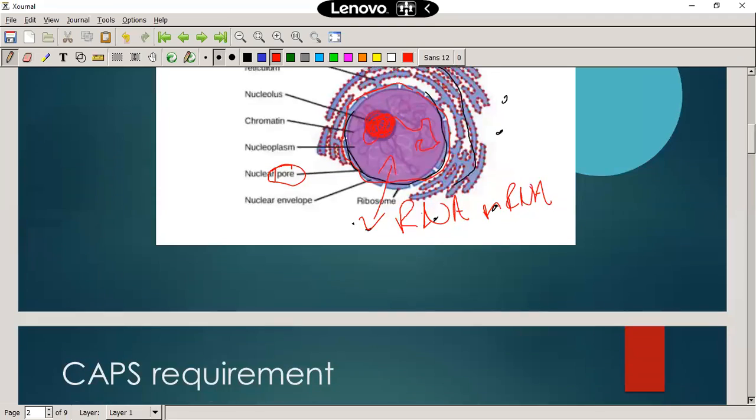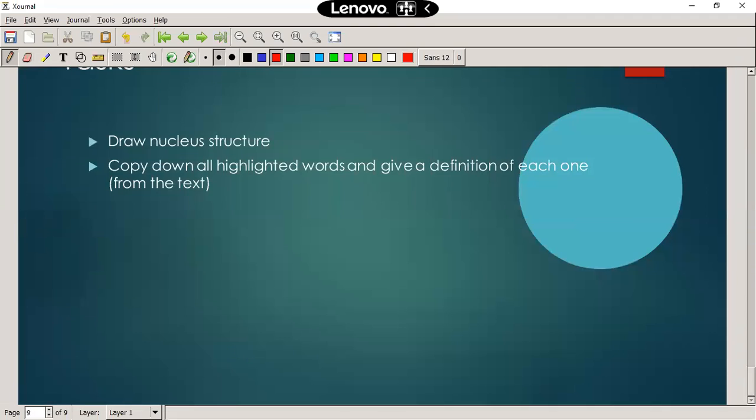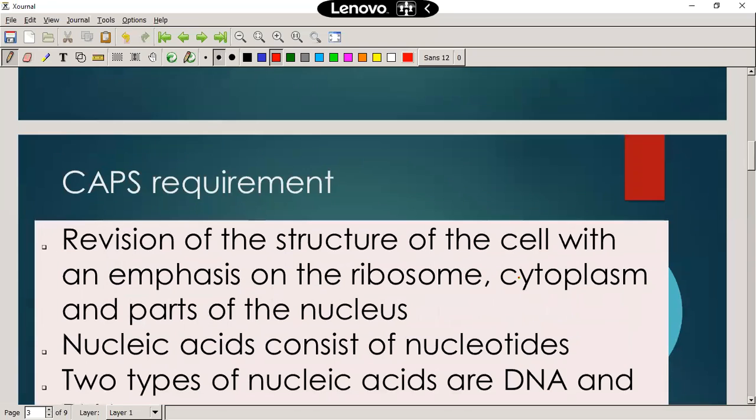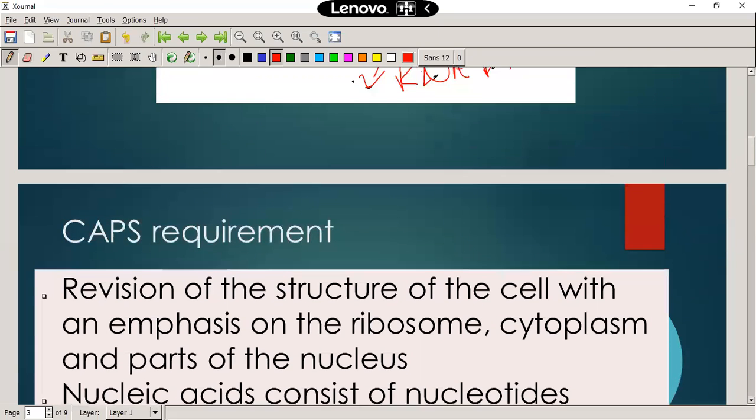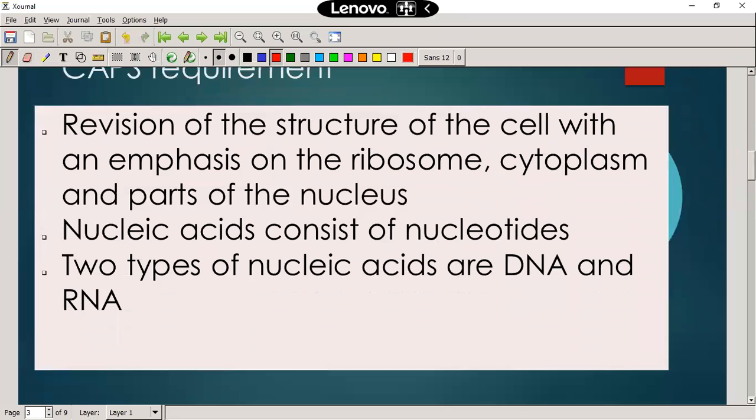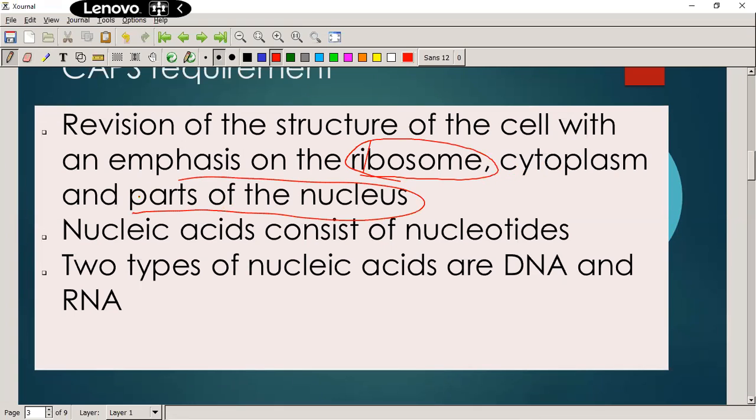What do we need to know for this section of work according to CAPS? Now they have revised the CAPS, but the material that you need to know is still the same. It's just the papers at the end of the year that's going to be different and the topics that have moved around. We need to know about the structure of the cell, the ribosomes, and the parts of the nucleus.